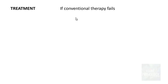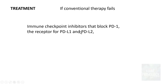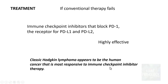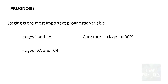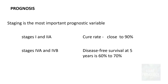If conventional therapy fails, the next choice is immune checkpoint inhibitors that block PD-1, the receptor for PD-L1 and PD-L2. Classical Hodgkin Lymphoma is the human cancer most responsive to immune checkpoint inhibitor therapy. Regarding prognosis, staging is the most important prognostic variable. Stage 1 and Stage 2A — meaning absence of systemic symptoms — have a cure rate close to 90%. Stage 4A and 4B, the disseminated diseases, still have a disease-free 5-year survival of around 60 to 70%.